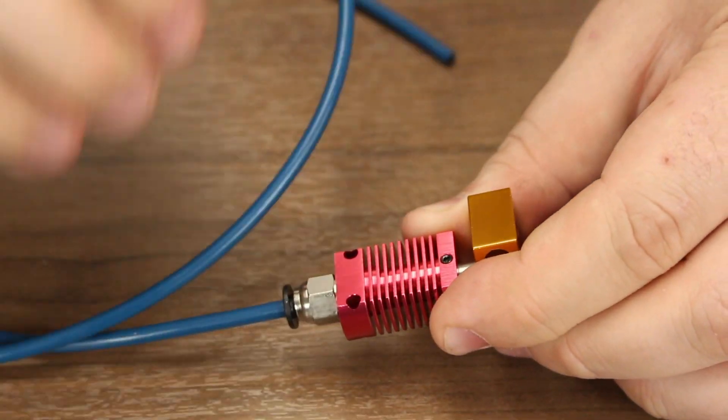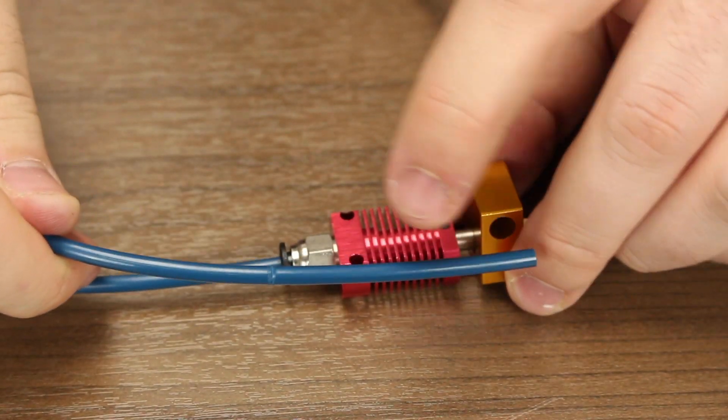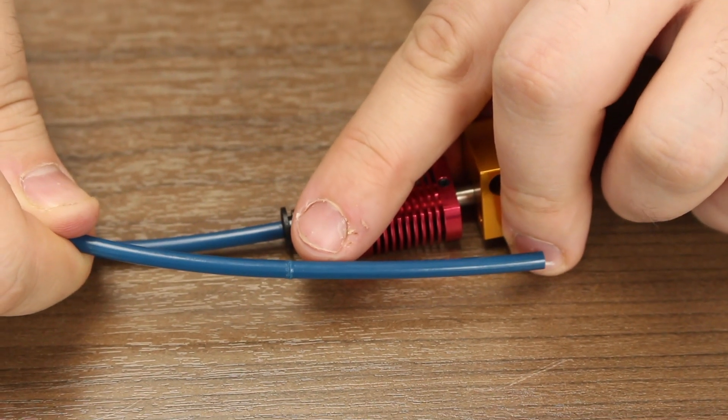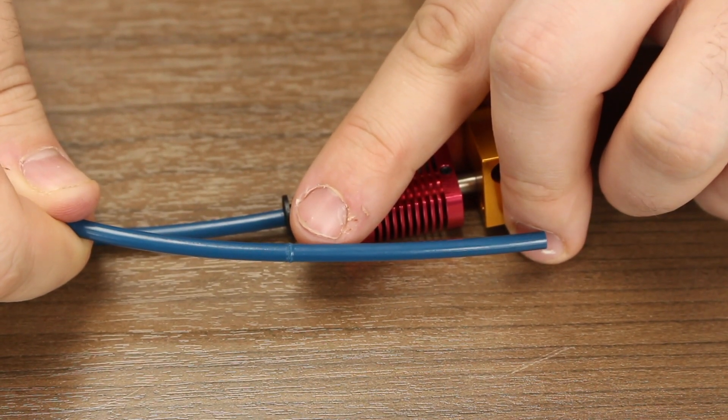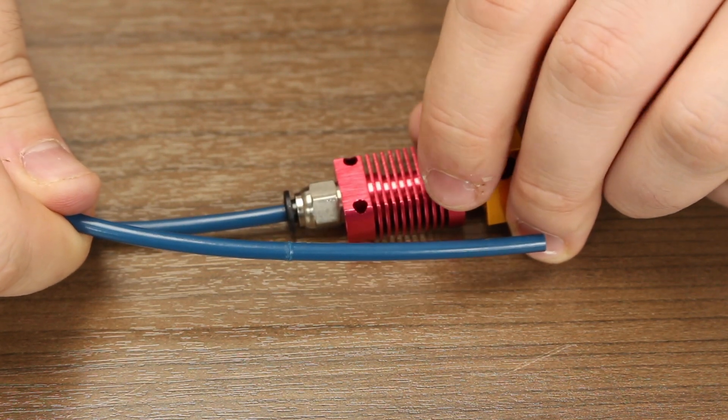If you ever have to remove your Bowden tube, you will notice the pneumatic fitting does scar the side of the tube as it clamps down. This is normal and the sign of a good seal. When reinstalling, it's a good idea to snip about 1mm off the bottom of the Bowden tube to give the fitting a fresh piece of plastic to bite into.